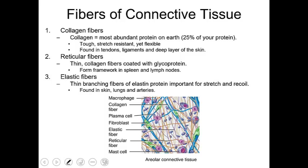To recap: connective tissues have cells that are wide apart, with space between them filled with ground substance. We've discussed the different cells of different connective tissues and the fibers seen in connective tissues. In classification, we can broadly classify them as embryonic versus mature — in utero versus out of utero. Now let's look at embryonic connective tissue. There are two types, and one of them gives rise to all other mature connective tissue.